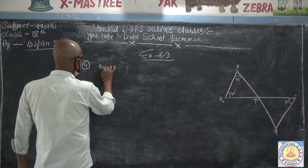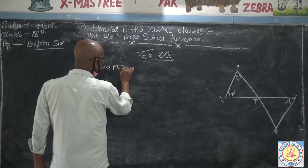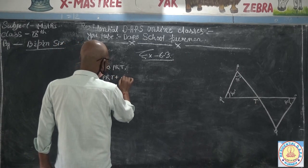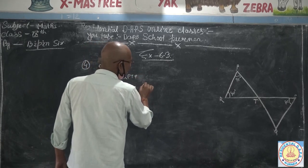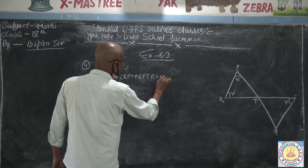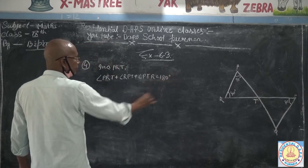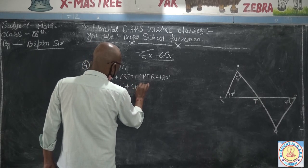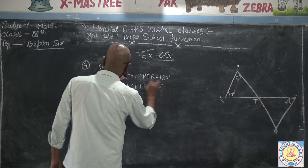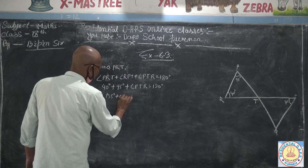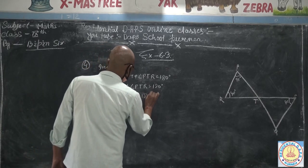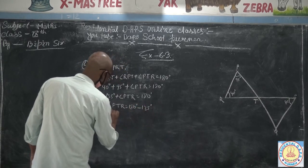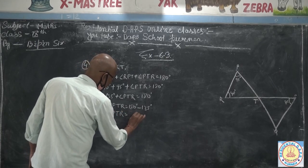In triangle PRT: angle PRT plus angle RPT plus angle PTR is equal to 180 degrees. Angle PRT is 40 degrees, RPT is 95 degrees, so 135 plus angle PTR equals 180. Therefore angle PTR is equal to 180 minus 135, which is 45 degrees.